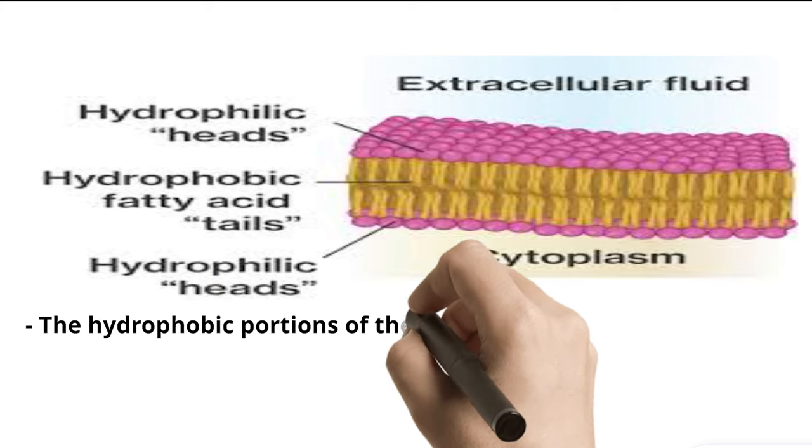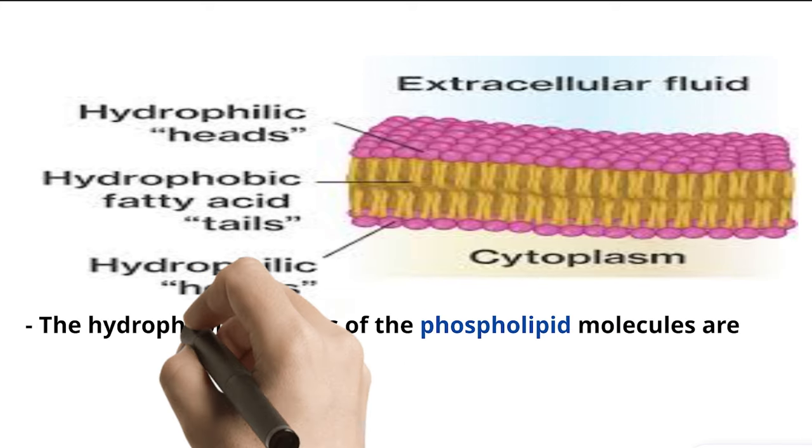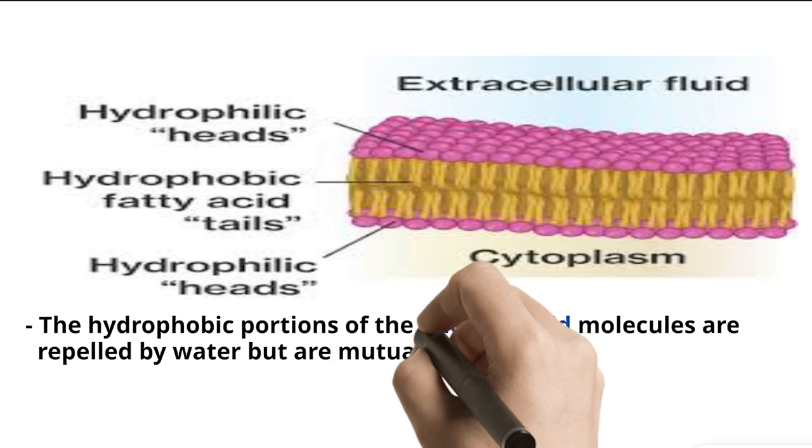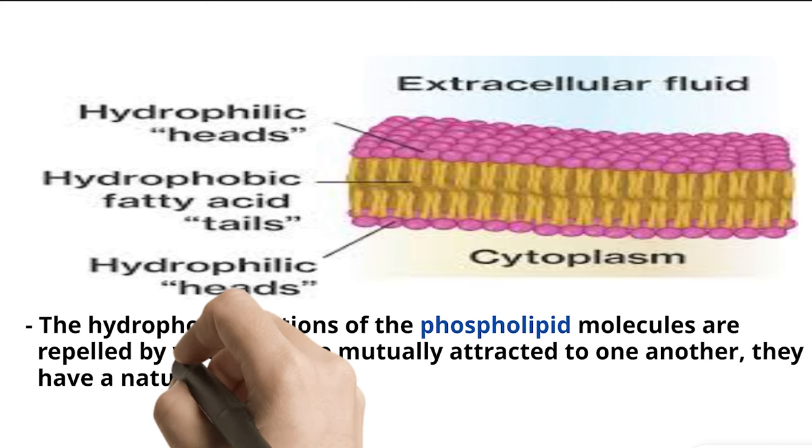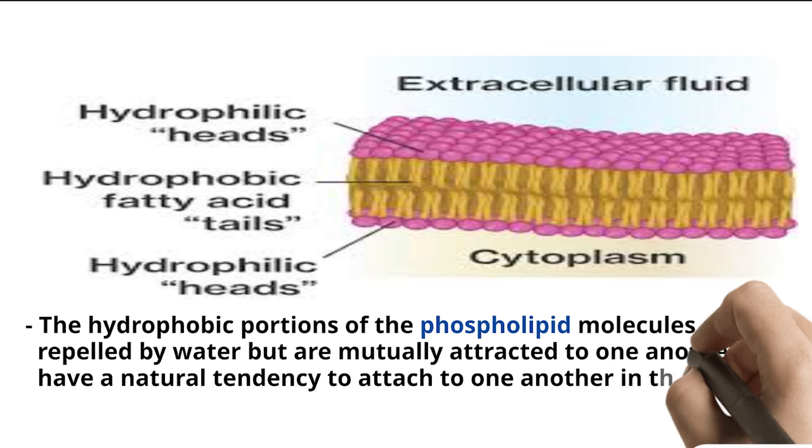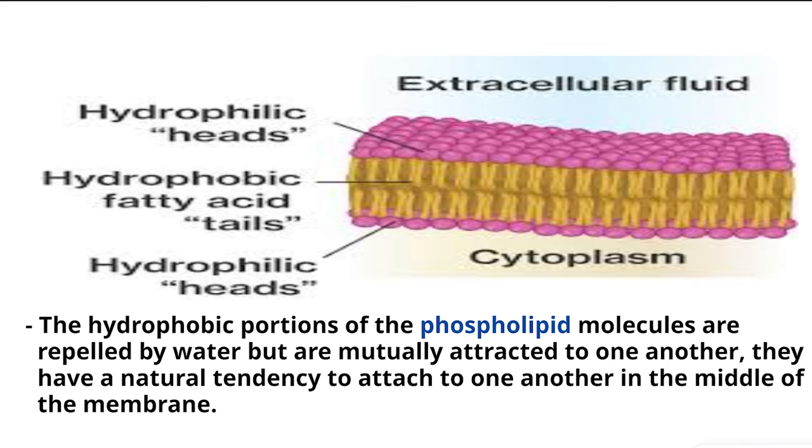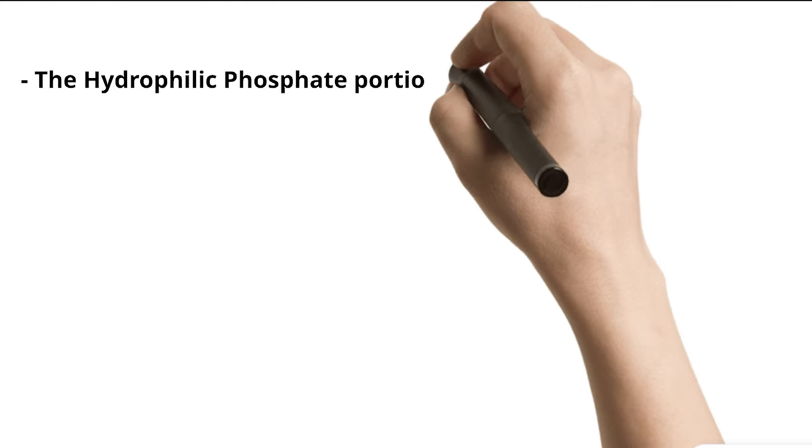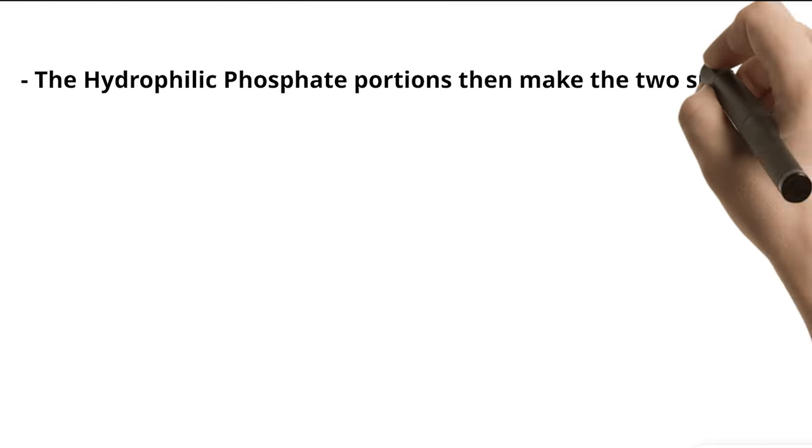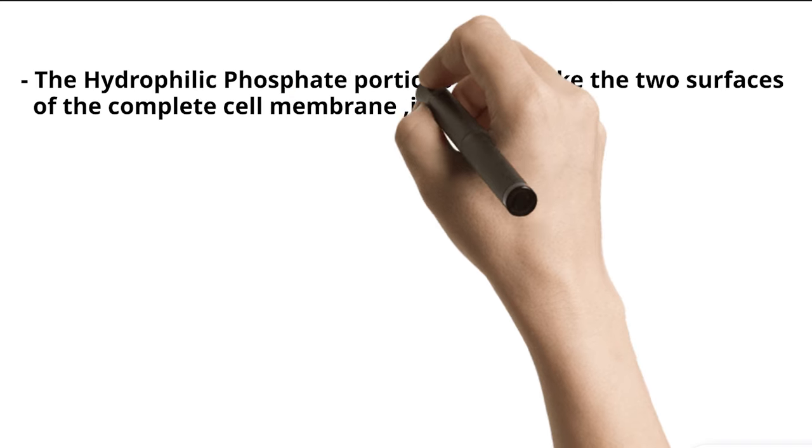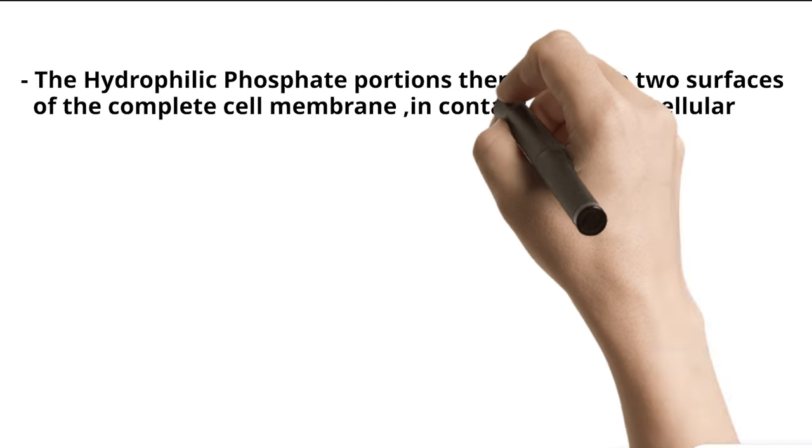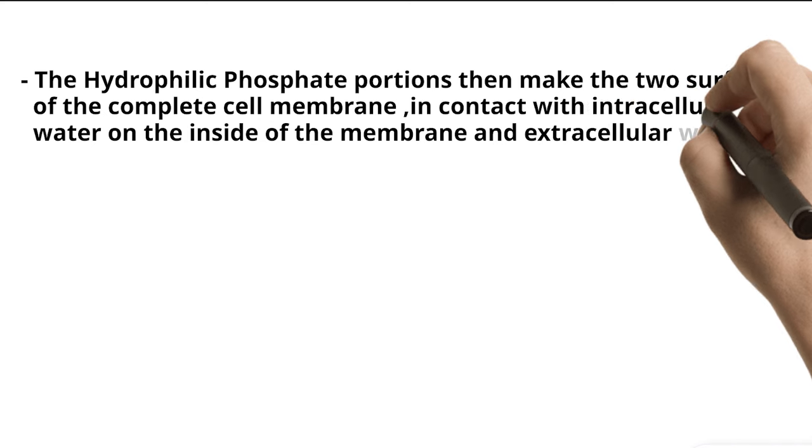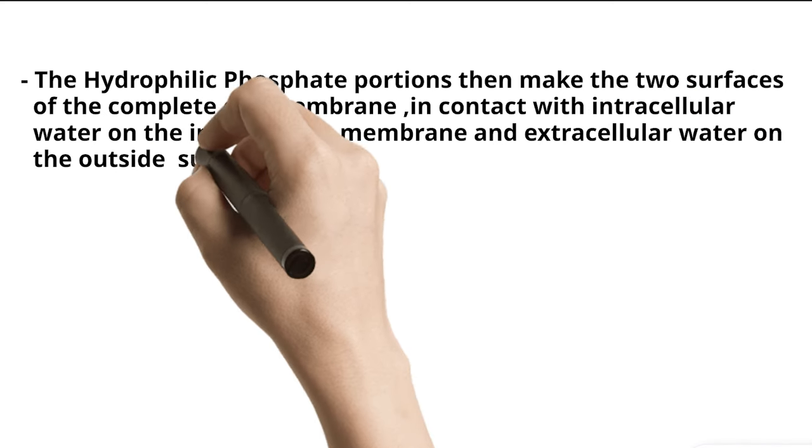14. The hydrophobic portions of the phospholipid molecules are repelled by water but are mutually attracted to one another. 15. They have a natural tendency to attach to one another in the middle of the membrane. The hydrophilic phosphate portions then make the two surfaces of the complete cell membrane, in contact with intracellular water on the inside of the membrane and extracellular water on the outside surface.